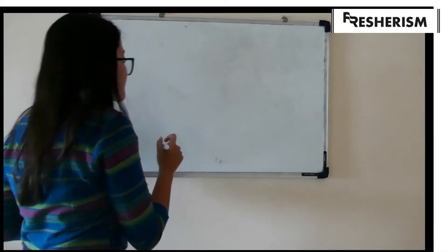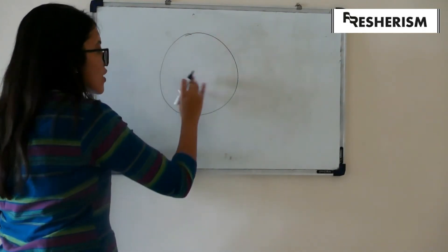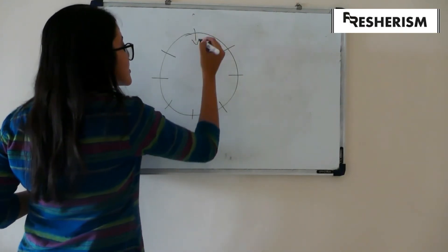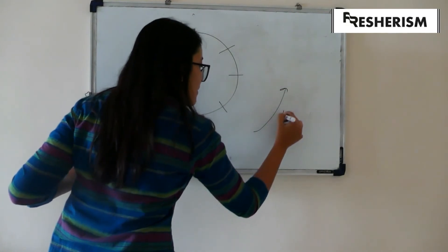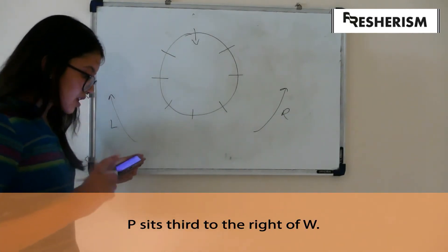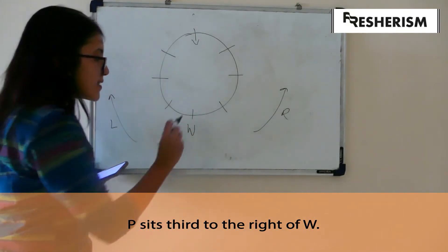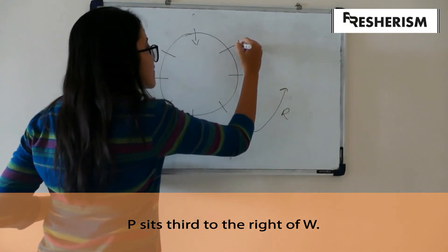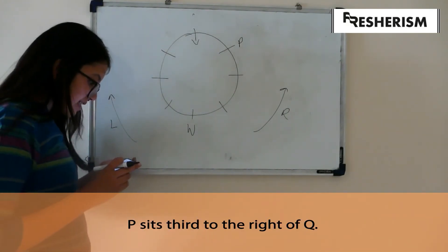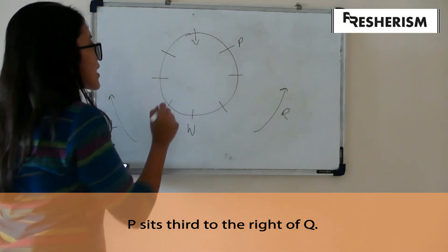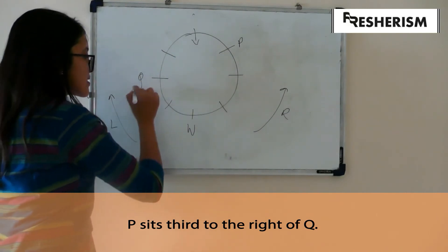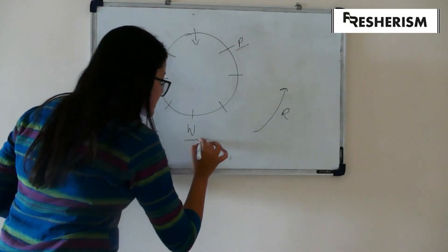Sounds complicated but it's very easy. We will again proceed according to our steps. First, draw the diagram. Second, mark the slots according to the number of people. Third, mark the direction towards which they are facing and accordingly mark their right hand side and their left hand side. The question tells us that P sits third to the right of W. If W sits over here, then the third right of W is this position, so P sits over here — one, two, three. P sits third to the left of Q, so Q sits over here. This gives us definite positions for Q, P, and W.